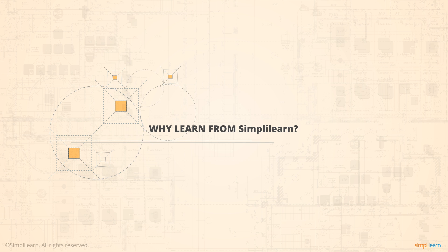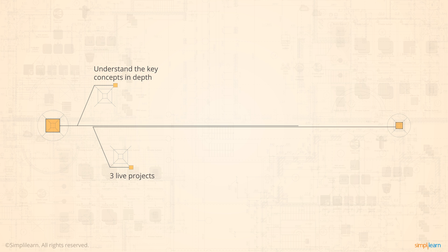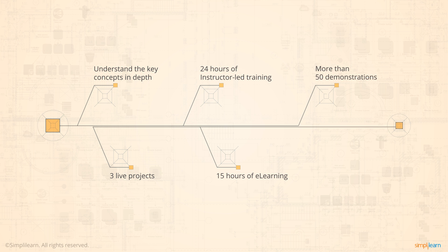Simply Learn's AWS Certified Solution Architect Associate Level course will help you understand the key concepts required to prepare for the certification exam. The practice assignments and the three live projects — this course comprises of 24 hours of instructor-led training, 15 hours of e-learning, over 50 demonstrations to understand architecting through the AWS console, and you will also be provided with three question sets totalling 180 questions.